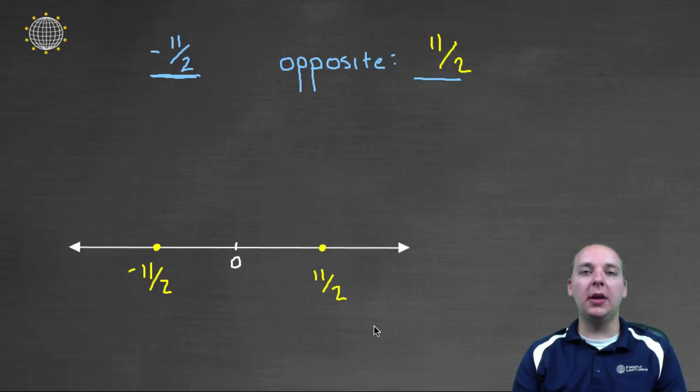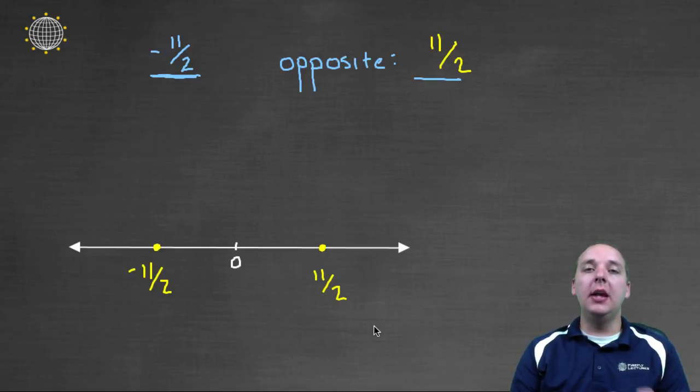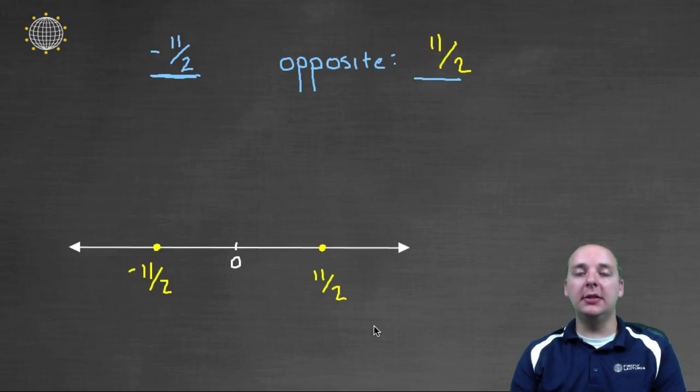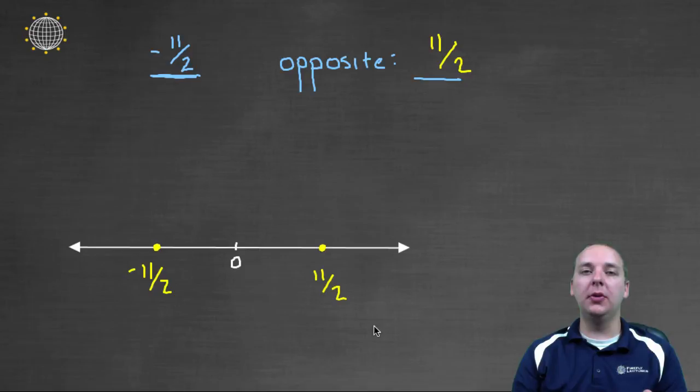The only caution I would give you with opposites is to not confuse opposites with absolute values. We have a video on absolute values that we'll talk about soon. Absolute values will always be non-negative, while opposites could be positive or negative, because they're simply on opposite sides of zero.